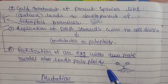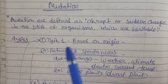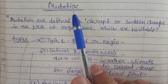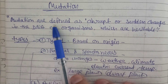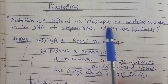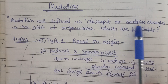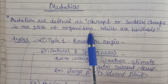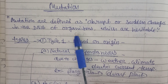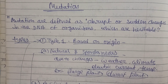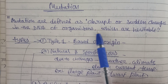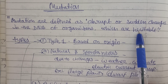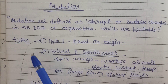The next advanced cultivation technique is mutation. Mutation is defined as abrupt or sudden changes in the DNA of any organism. These changes in the DNA are heritable — any such heritable changes occurring in an organism's DNA are called mutations.